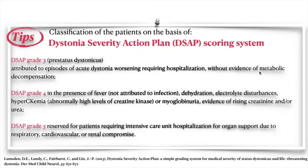Grade three represents acute dystonia worsening requiring hospitalization but without evidence of metabolic decompensation. Grade four and grade five were considered status dystonicus itself — grade four in the presence of fever and metabolic decompensation, and grade five reserved for patients requiring intensive care unit admission for organ support due to respiratory, cardiovascular, or renal compromise.